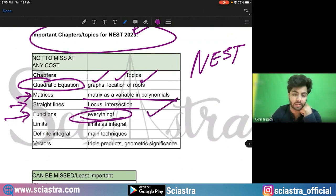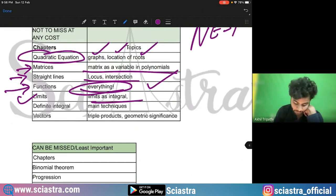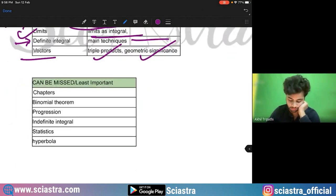Quadratic equation, very important graph location and location of the roots. Then matrices, matrices as variable in polynomials. Straight line, locus and intersection of the curves. This is for NEST, not for IAT. For functions, everything of the function is important. For limits, limits as integral. Then definite integral, main techniques of solving definite integral. Vectors again, triple product and geometric significance of vectors.